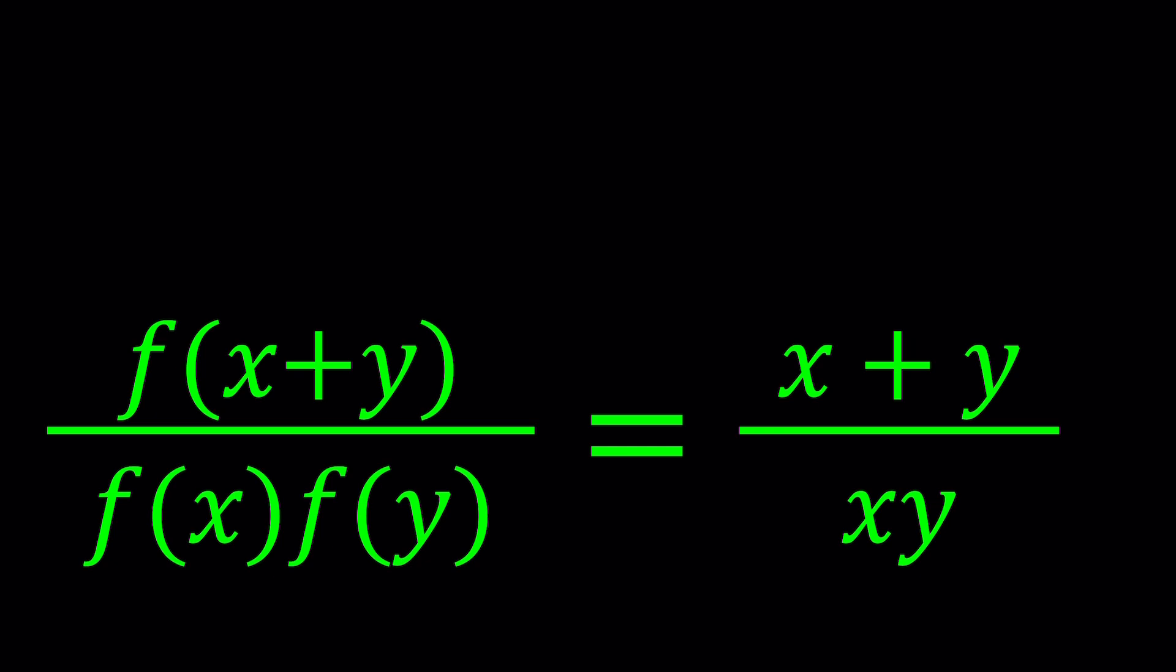So we have f of x plus y divided by f of x multiplied by f of y, and that is equal to x plus y all over xy, the product.